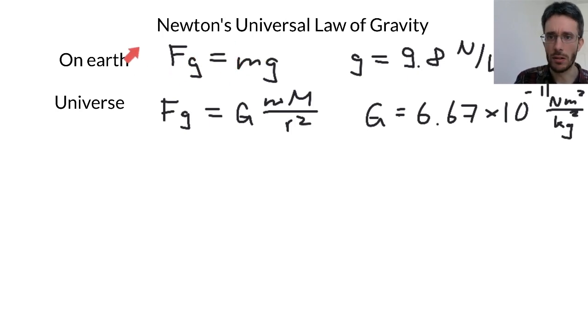That doesn't mean this law is wrong. It's just that it's limited to being on the surface of the planet. On the other hand, we have the universal law which, as the name suggests, is supposed to be universal, meaning if we use it for the surface of the planet it should also work.